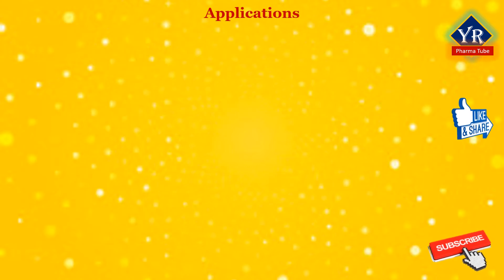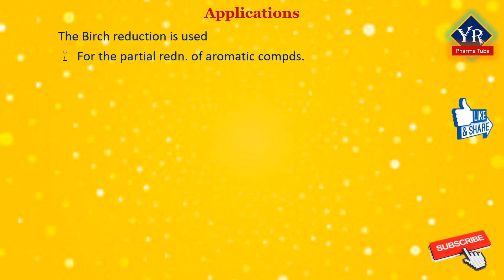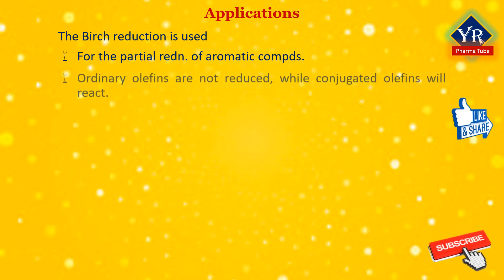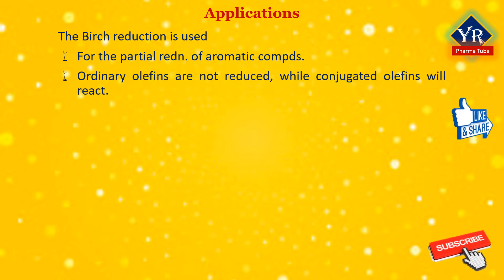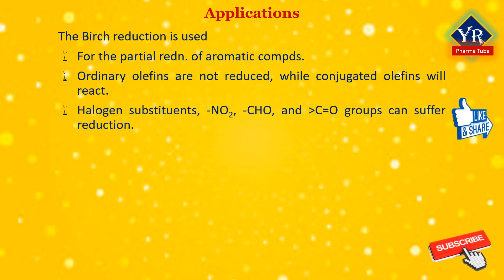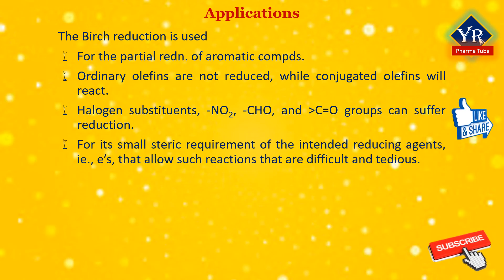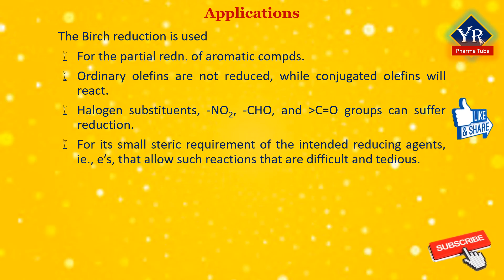Applications of Birch reduction reaction. The Birch reduction is the method of choice for the partial reduction of aromatic compounds, while catalytic hydrogenation would lead to fully hydrogenated products. Ordinary olefins are not reduced under Birch reduction while conjugated olefins will react. Halogen substituents, nitro, aldehyde, and ketone groups can suffer reduction. Birch reduction is found to be extremely useful owing to its small steric requirement of the intended reducing agents — i.e. electrons — that critically allow such reactions that are rather difficult and tedious to accomplish with other available reducing agents.